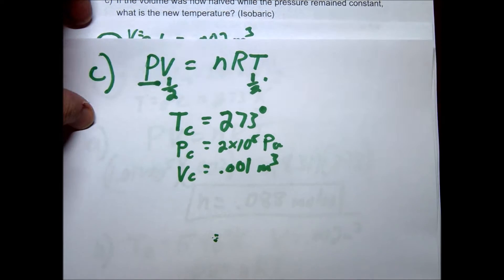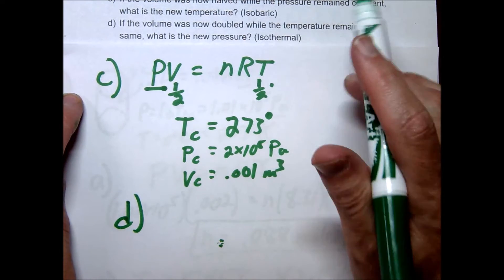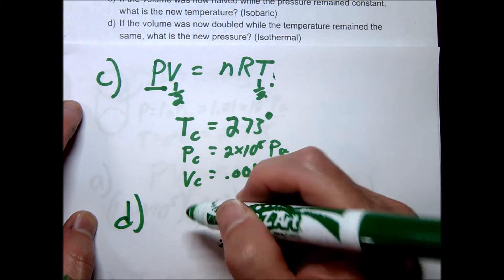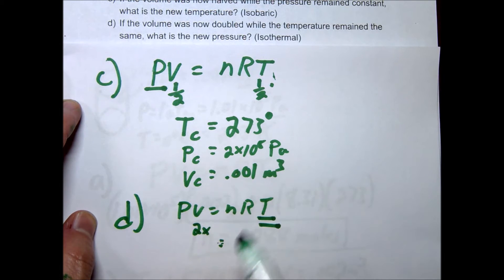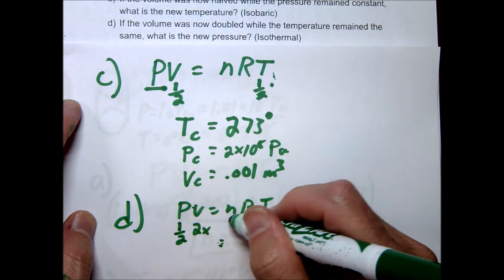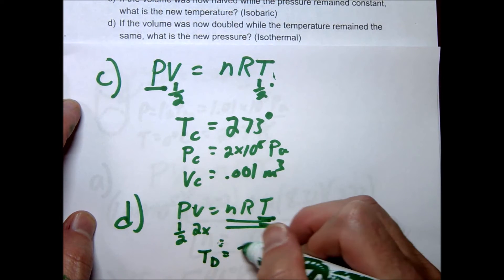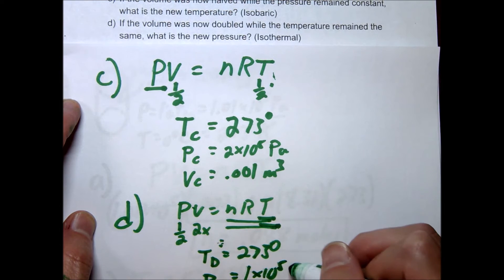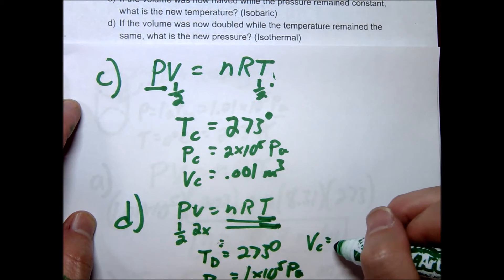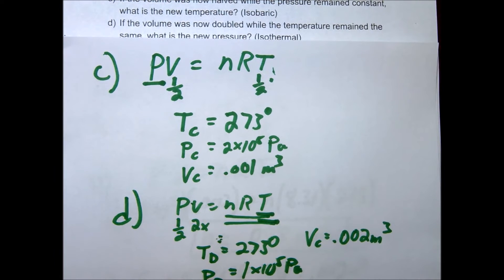For letter D, we double the volume and hold the temperature constant — this is called an isothermal process. Using PV = nRT: temperature stays constant and volume doubles. If volume is doubled, pressure must be cut in half to keep the equation balanced. So temperature at D stays at 273 kelvins, pressure at D is 1 times 10 to the 5th, and volume at D is doubled back to 0.002 meters cubed.